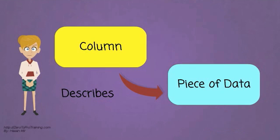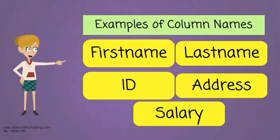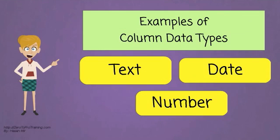You may have ten columns in certain table or one hundred columns. A column describes a piece of data. You give a name to each column. For example first name, last name, date etc. You also describe what type of data the column will contain. For example a piece of text, or a date, or a number.